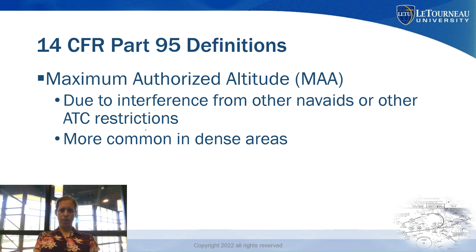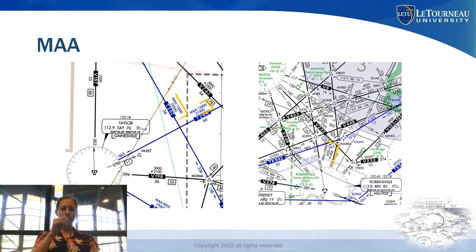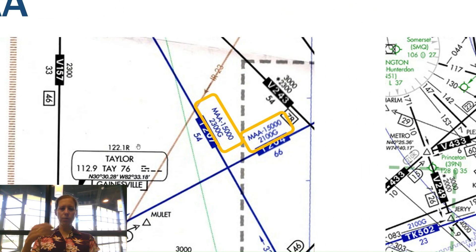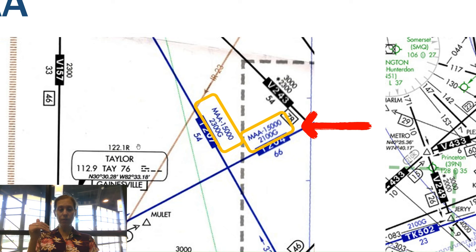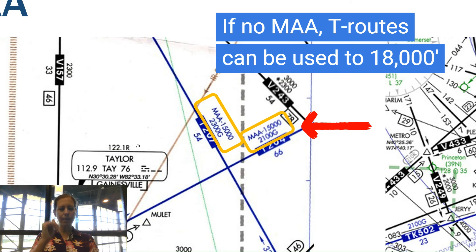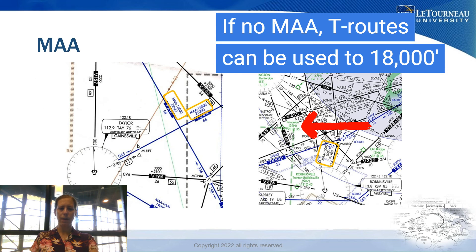Occasionally we see a Maximum Authorized Altitude, or MAA, which is due to interference from other restrictions that ATC might impose. For example, on some T-routes the MAA is 15,000 feet. Ordinarily, a T-route could be used up to 18,000 feet — the top of a low-altitude en route chart — but the MAA limits you to 15,000 feet in this case.